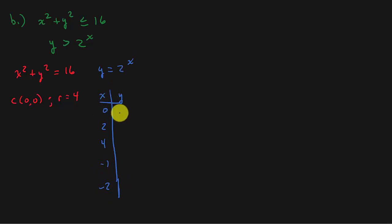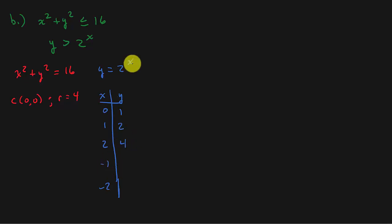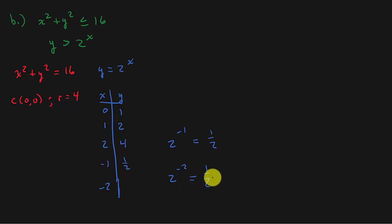Plugging in: 2 to the 0 is 1, 2 to the first is 2, 2 squared is 4, 2 to the negative 1 is 1/2, and 2 to the negative 2 is 1/4. Now we're ready to graph. Draw the circle with center (0,0) and radius 4 — go right 4, up 4, left 4, down 4. Then plot the exponential points: (0,1), (1,2), (2,4), (-1, 1/2), (-2, 1/4) and draw it as a dashed line.